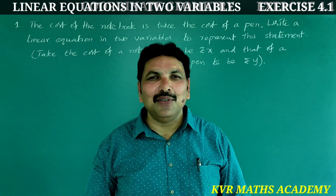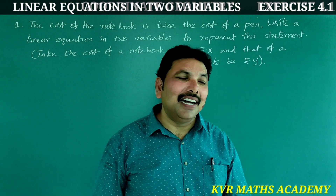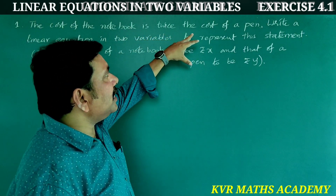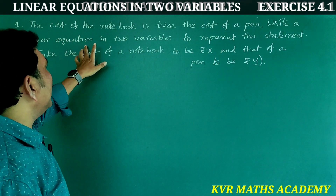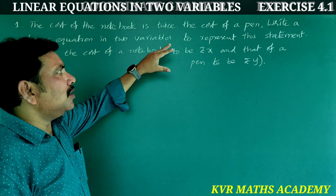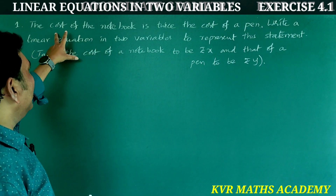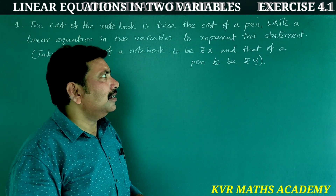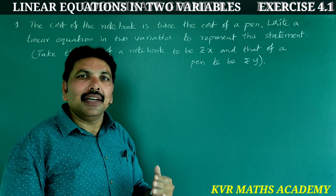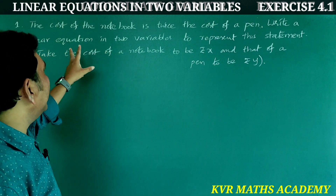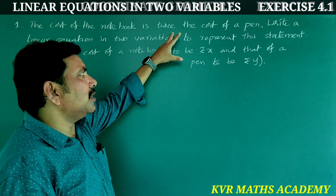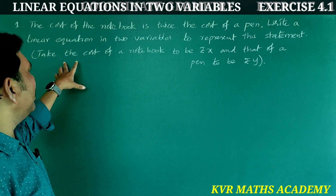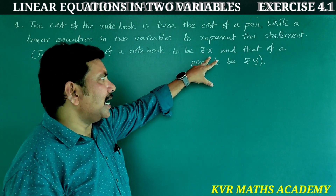The first question: the cost of a notebook is twice the cost of a pen. Write a linear equation in two variables to represent this statement. We need to write a linear equation in two variables. Take the cost of a notebook to be rupees x and the cost of the pen to be rupees y.